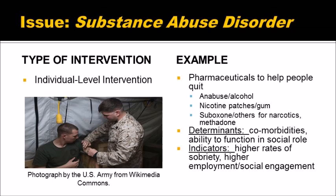Good examples of an individual-level intervention for substance abuse disorder would be pharmaceuticals to help people quit whatever they are addicted to. Anabuse is available for those addicted to alcohol, and nicotine patches and gum are available for those addicted to tobacco. Also, there is Suboxone and Methadone for those addicted to narcotics. This type of intervention could affect the determinants of comorbidities and ability to function in a social role, and could change the indicators of higher rates of sobriety and higher employment and social engagement.